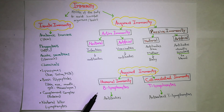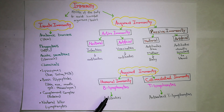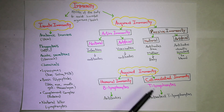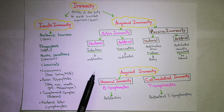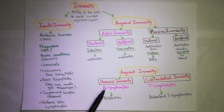In humoral immunity, B lymphocytes basically produce antibodies. B lymphocytes become plasma cells and then produce antibodies. In cell-mediated immunity, T lymphocytes are activated and they are directly part of the immune response. So the two types of acquired immunity based on lymphocytes are humoral immunity and cell-mediated immunity.